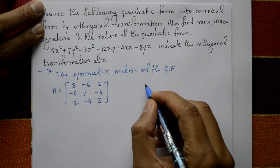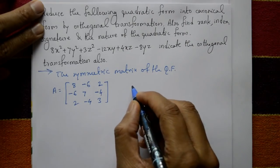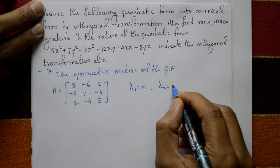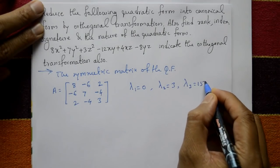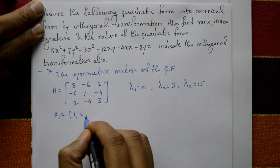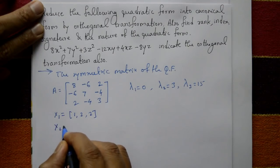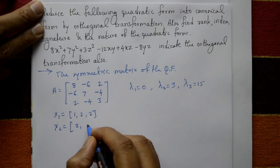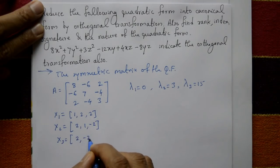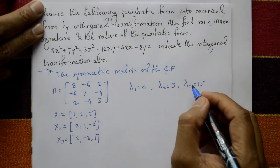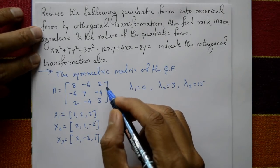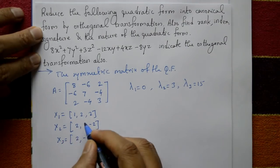Using the characteristic equation |A − λI| = 0, we find the eigenvalues and eigenvectors. Lambda 1 = 0, lambda 2 = 3, and lambda 3 = 15. The eigenvectors are: x1 = (1, 2, 2), x2 = (2, 1, −2), and x3 = (2, −2, 1). For how to find eigenvalues and eigenvectors, a video is already uploaded — watch those previous videos to better understand.